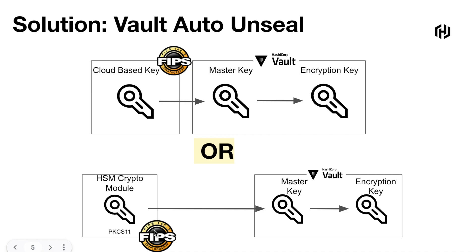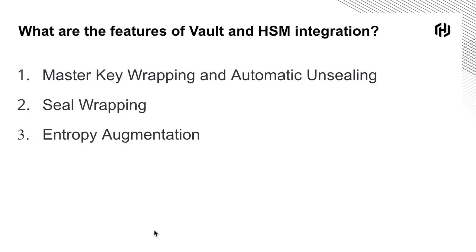What are the features of Vault and HSM integration? This feature comes with the Vault Enterprise offering. First, automatic unsealing: vault stores its HSM-wrapped master key in storage, allowing for automatic unsealing — and for this purpose you can use any of the cloud services listed. Second, master key wrapping: HashiCorp Vault protects its master key by transiting it through the HSM for encryption, rather than splitting it into keys, moving away from a manual approach to a more automated one using HSM or cloud providers.